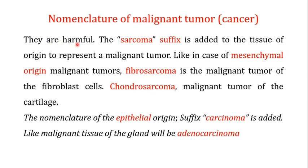For the nomenclature of malignant tumors, we use the suffix '-sarcoma,' which is added to the tissue of origin to represent a malignant tumor. For example, for malignant tumors of mesenchymal origin, fibrosarcoma is the malignant tumor of fibroblast cells. If the tumor of fibroblast origin is benign we call it fibroma, using the suffix '-oma,' but if the same fibroblast cells have a malignant tumor we use the term fibrosarcoma. So fibroma is the benign tumor of fibroblast cells, and fibrosarcoma is the malignant tumor of fibroblast cells.